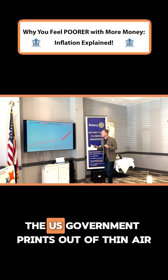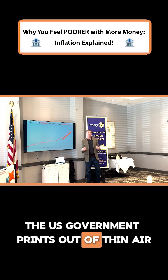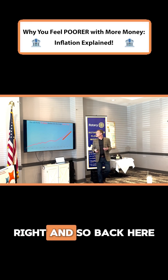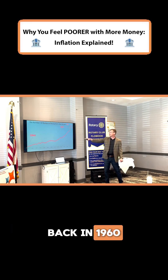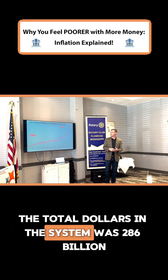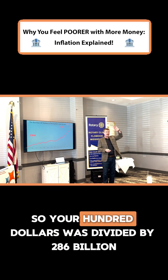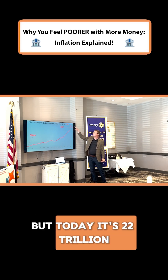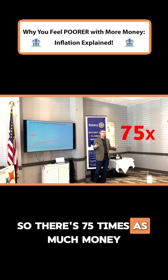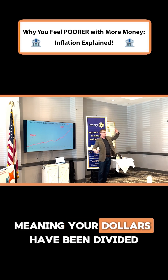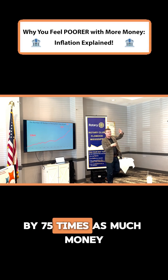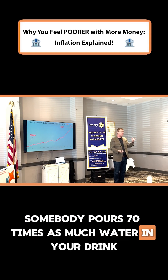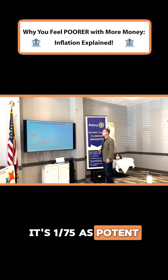The problem is the US government prints out of thin air about 7% more money every year. Back in 1960, the total dollars in the system was 286 billion, so your hundred dollars was divided by 286 billion. But today it's 22 trillion — there's 75 times as much money, meaning your dollars have been diluted by 75 times. It's like having a drink and somebody pours 70 times as much water in it — it's 1/75th as potent.